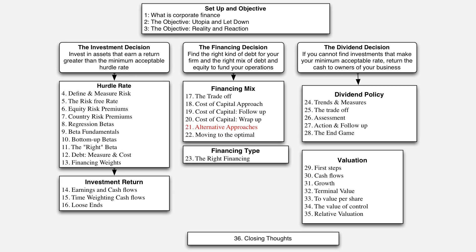In these last three sessions, we used the cost of capital approach to come up with the optimal financing mix for a company. In this session, I'd like to move past the cost of capital approach and look at different ways of coming up with the optimal — alternative ways. In particular, I'd like to focus on two.